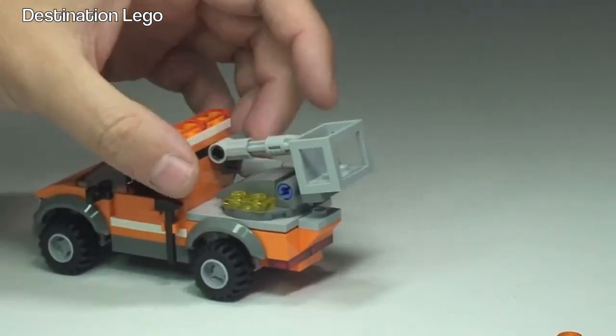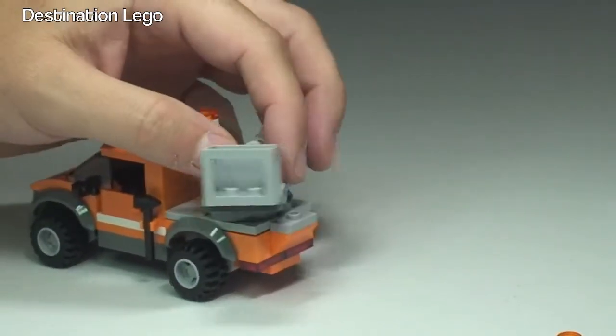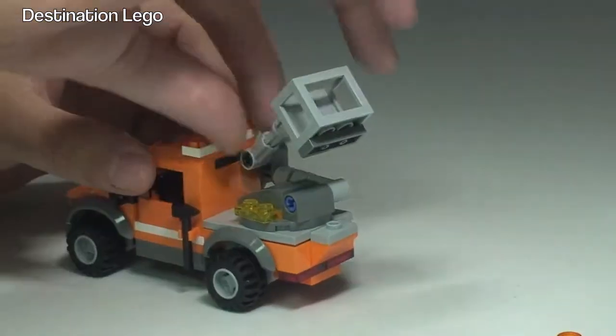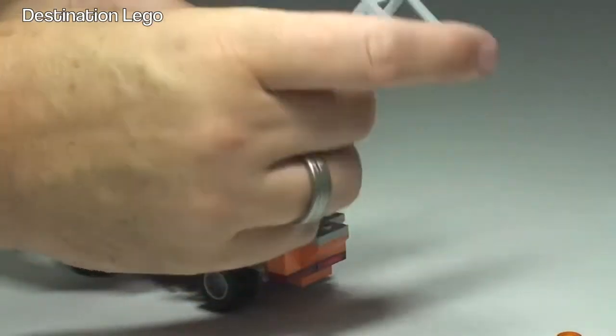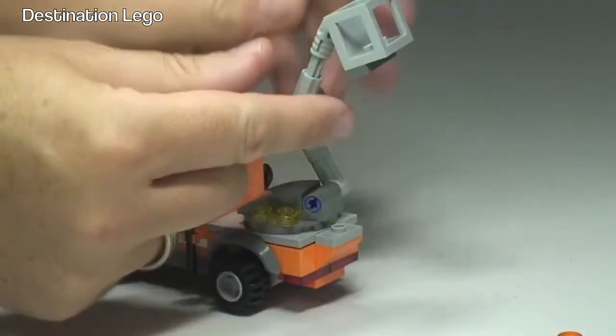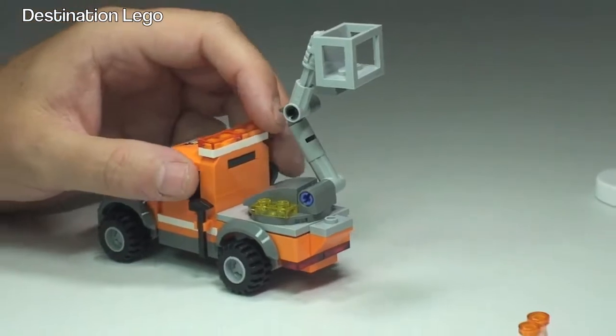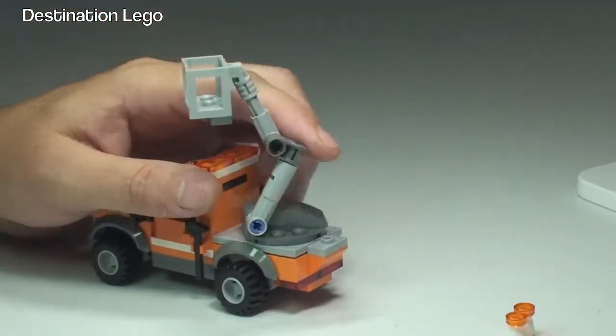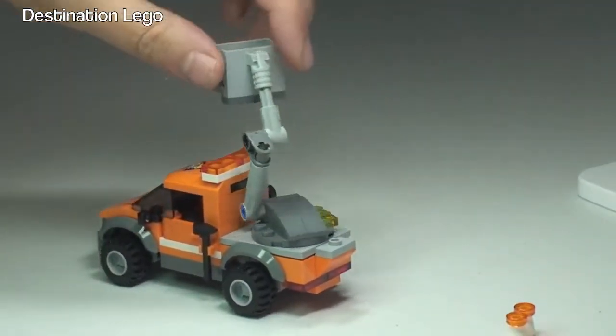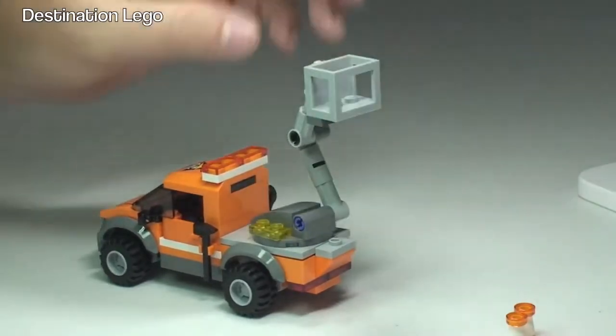This can obviously turn around and be extended up into the air, like so, so we can get it right up if you want to. The actual basket is adjustable too, and we can see there and that can spin all the way round now that that is extended, like so.